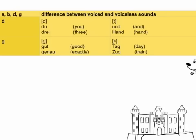We have D and G — the same principle applies. It's the difference between D and T, and G and K. 'Du', 'drei' — and at the end: 'und', 'Hand'. Please repeat: 'Du', 'drei', 'und', 'Hand'. For G: 'gut', 'genau' — and at the end: 'Tag', 'Zug'. Once again: 'gut', 'genau', 'Tag', 'Zug'.